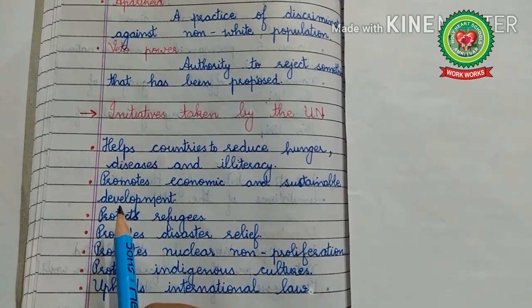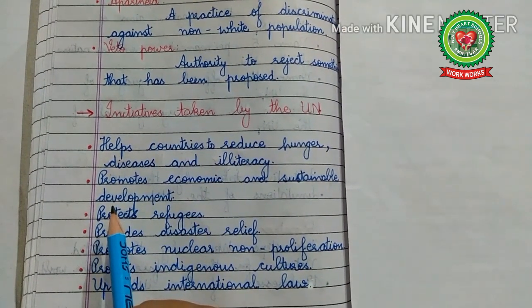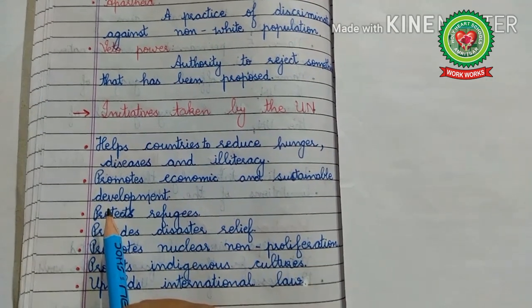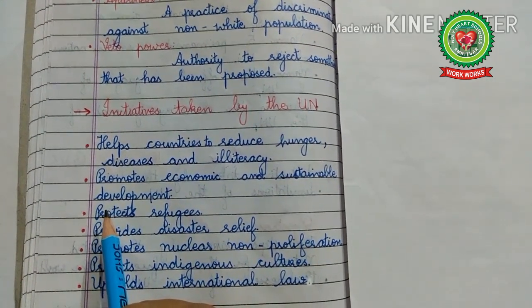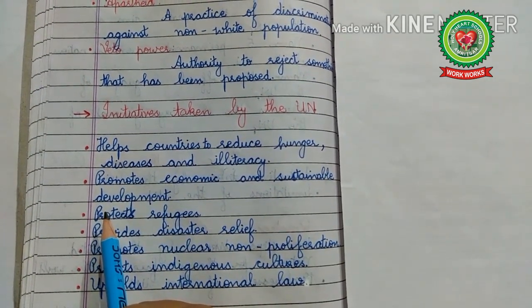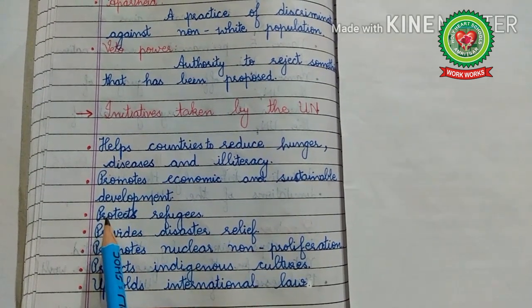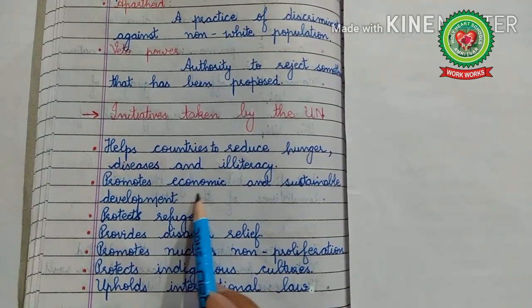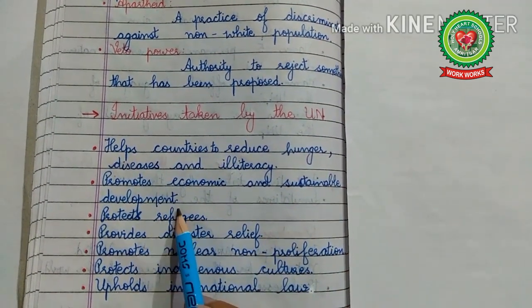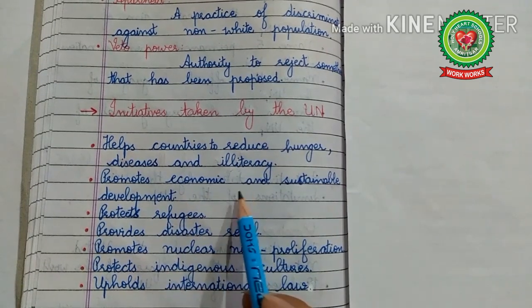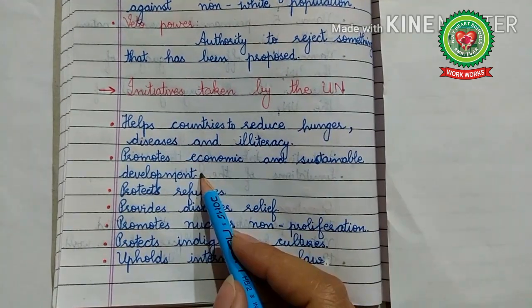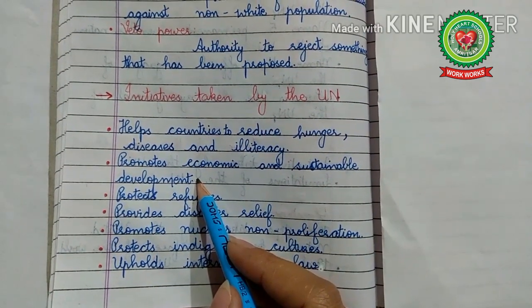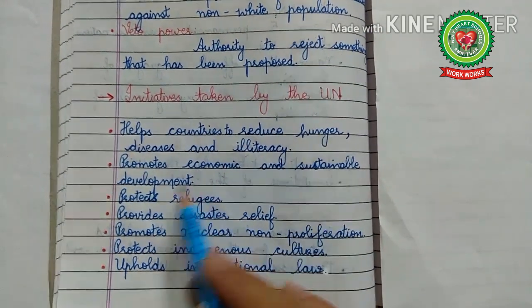UNO is very successful in its fight against poverty, diseases, and illiteracy, and it has been making a lot of efforts to eradicate hunger, diseases, and illiteracy from the world. Time to time, UNO organizes different programs to eradicate these problems. Second initiative: it promotes economic and sustainable development, and the United Nations has done extremely well through its specialized agencies.